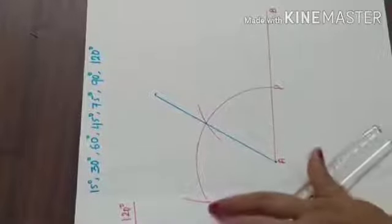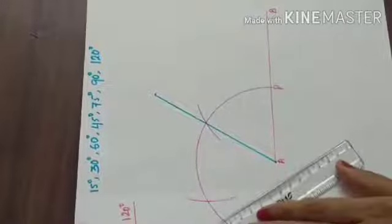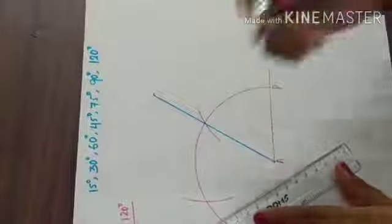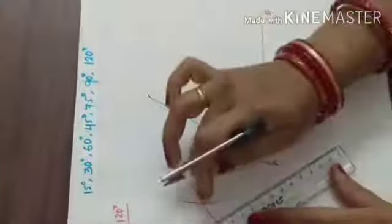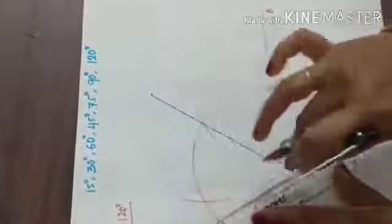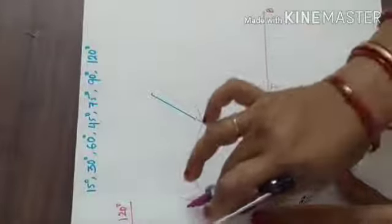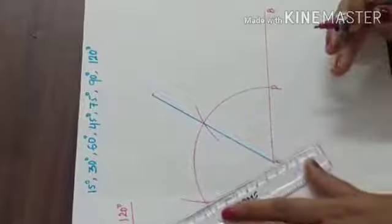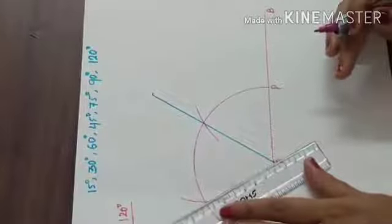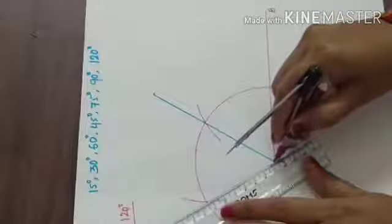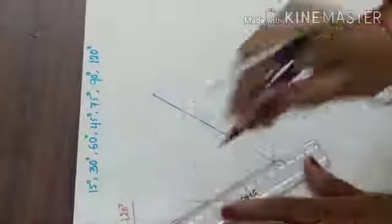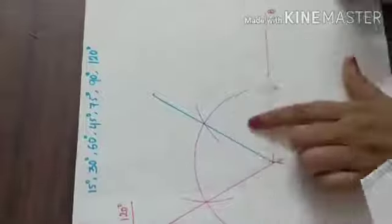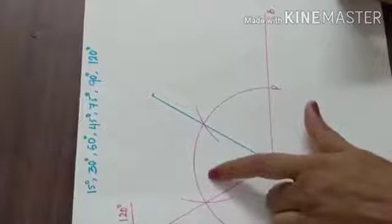This is your intersecting point. If you draw a line from point A to this intersecting point, that gives you 60 degree and 120 degree.